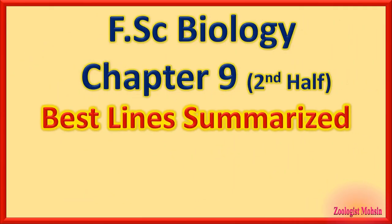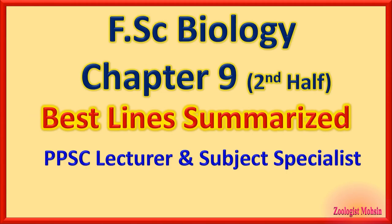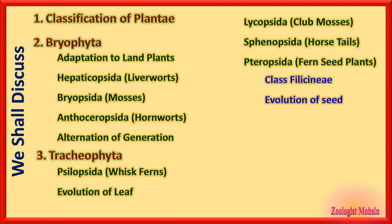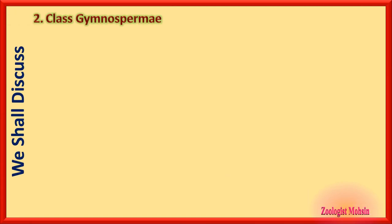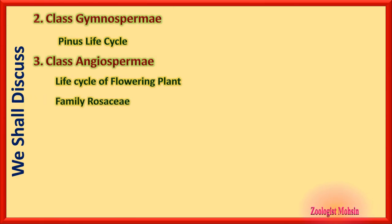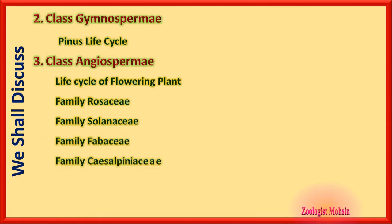FSC Biology Chapter 9 — second part, best line summarize for preparation of PPC lecture, subject specialist biology and botany. In the previous part of this chapter we discussed classification of Plantae up to evolution of seed. Today we shall discuss class Gymnospermia, the Pinus life cycle, class Angiospermia, life cycle of flowering plants, and the most important families: Rosaceae, Solanaceae, Fabaceae,